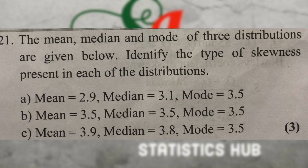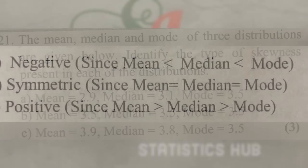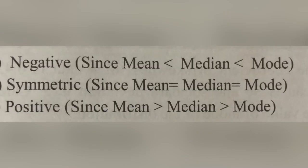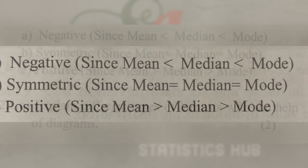Negative skewness: mean is less than median, which is less than mode. Positive skewness: mean is greater than median, which is greater than mode. If we look at the data here, we can use A, B, C to identify the type of skewness.